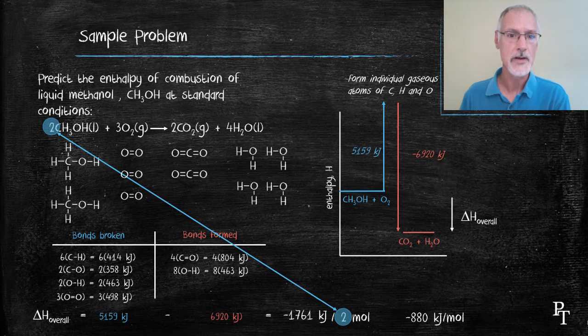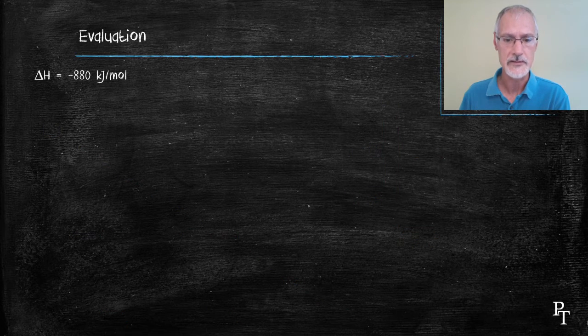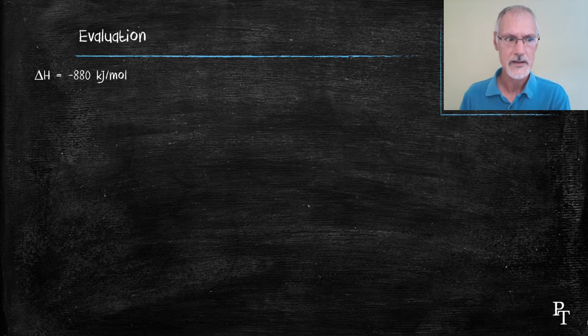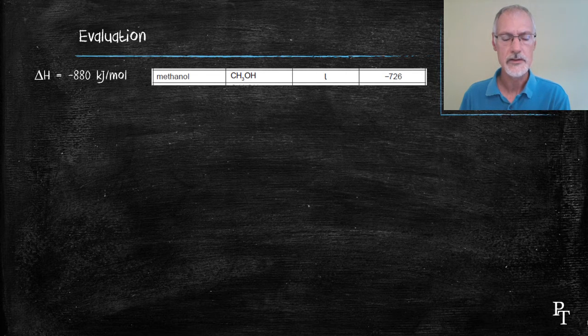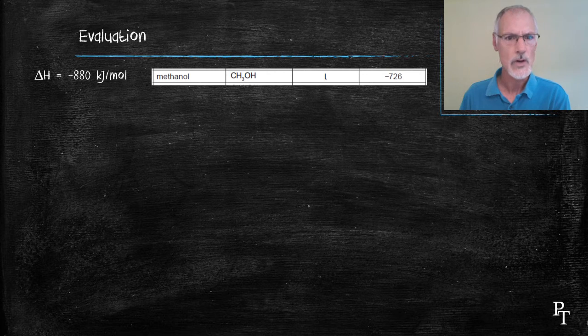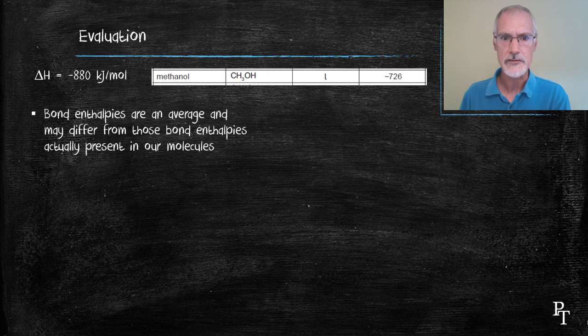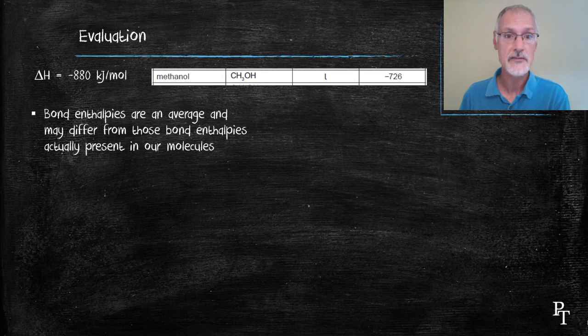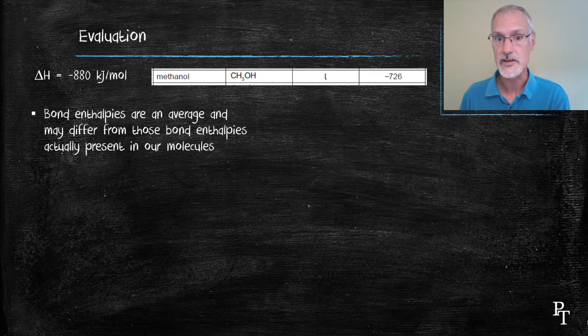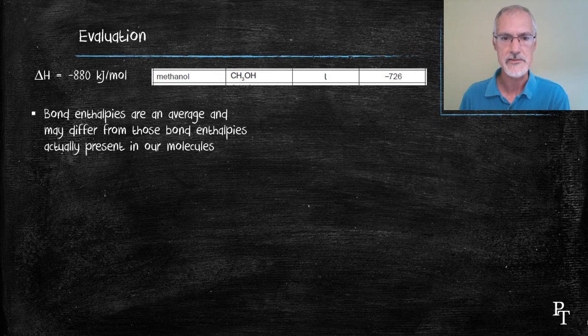Let's take a look at how that actually compares with measured values that are in your IB data booklet. So there's my experimental value, but reported in literature is the following value. Why the difference? Well, first off, we can take into account that we use average bond enthalpies and the actual strength of the bonds may differ slightly in the substances we're using. So that could lead to some values that change.